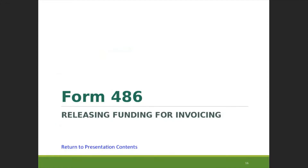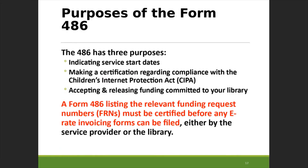Now let's talk about that last form you need to file before you can start invoicing: the form 486. The 486 serves a few purposes — you use it to indicate the service start dates for each funding request, make a certification regarding your library's CIPA compliance, and formally accept and release the committed funding so it can be invoiced. Whether it's a SPI form filed by your service provider or a BEAR form filed by your library, there must be an approved form 486 on file listing that funding request, or the invoicing form will be rejected.